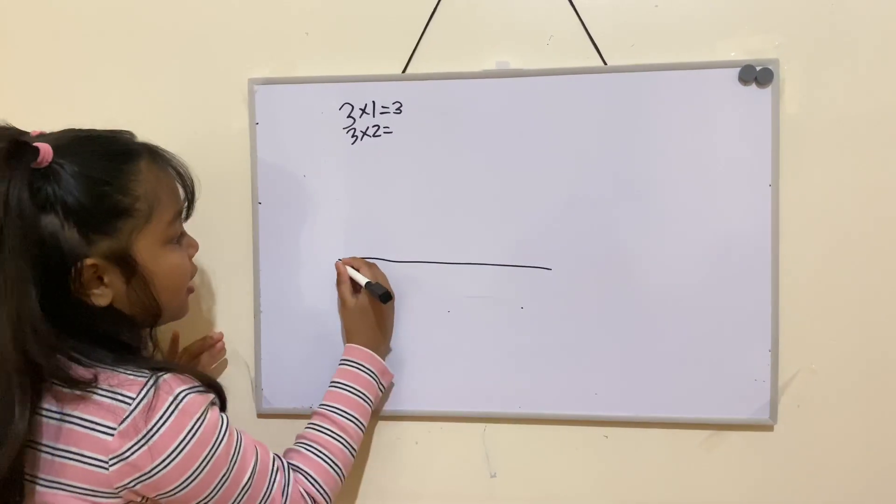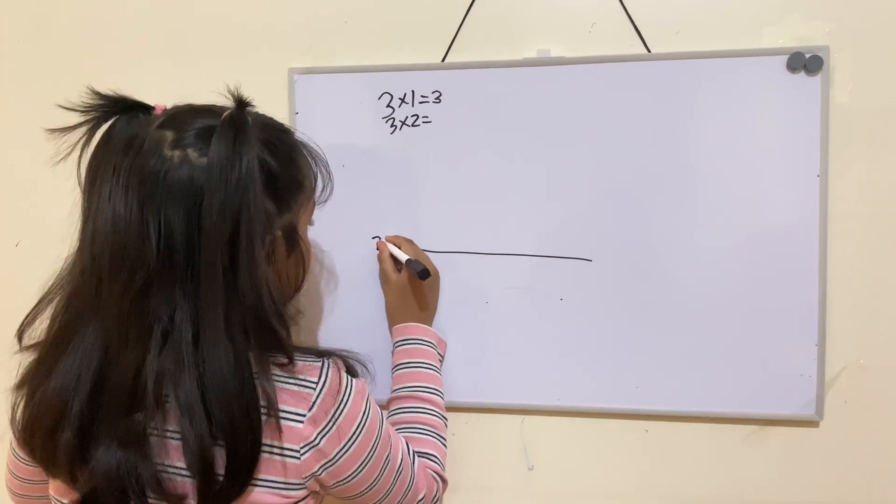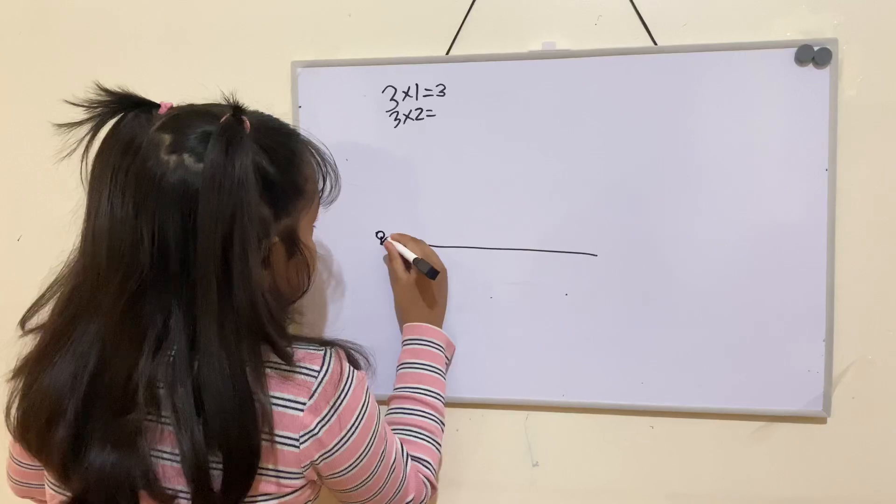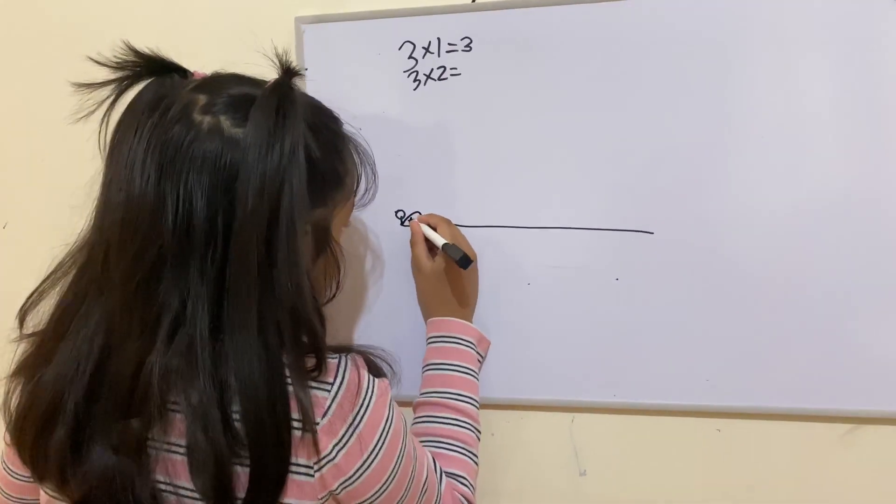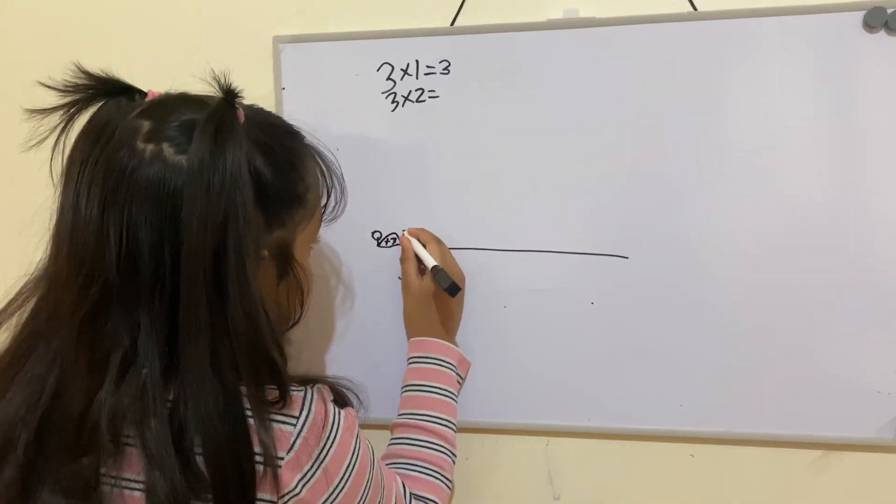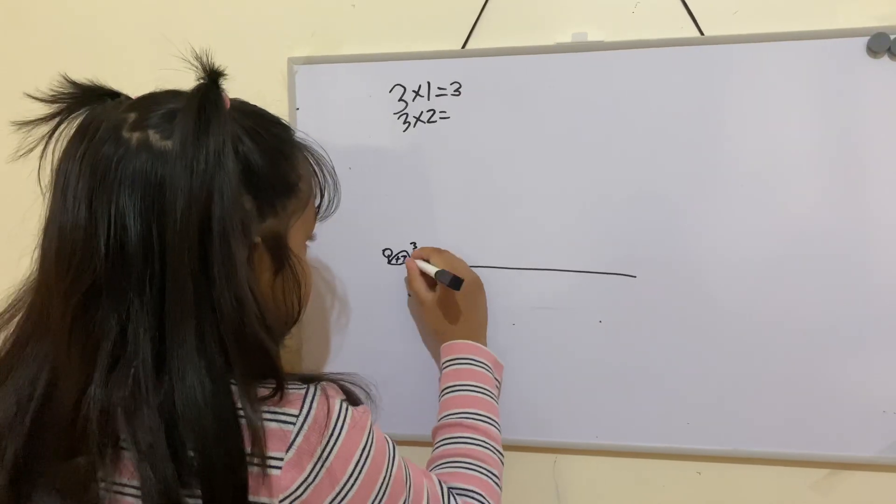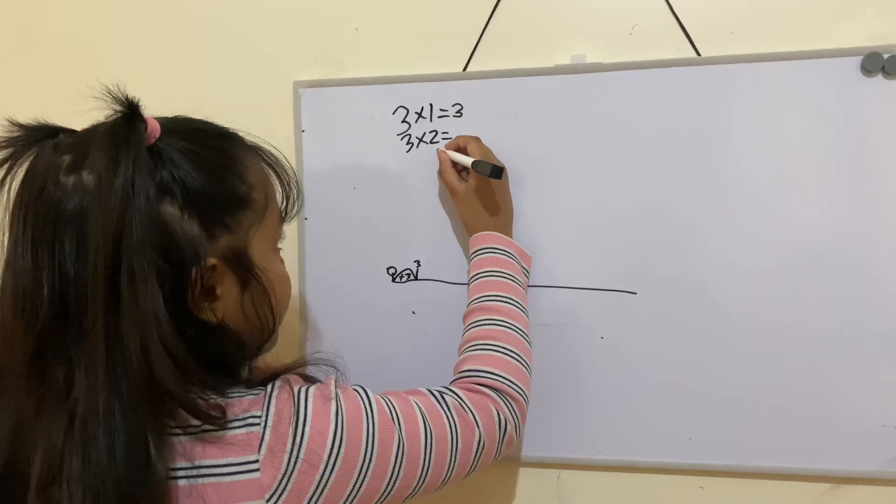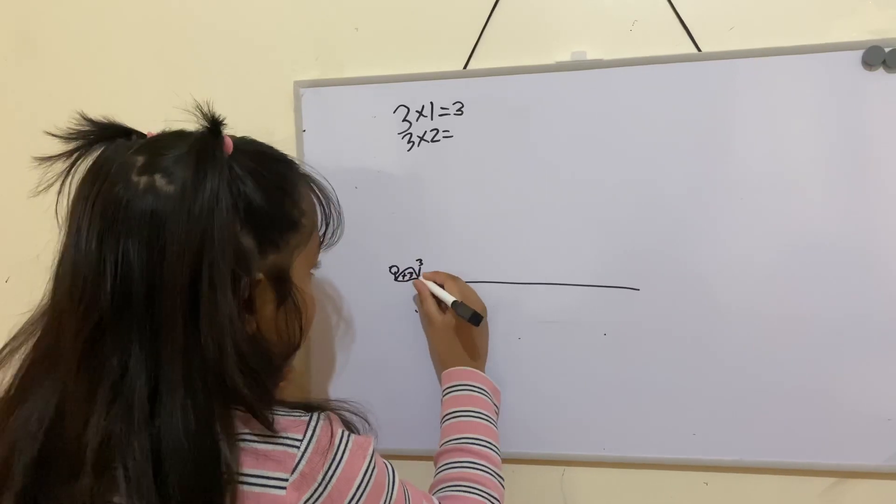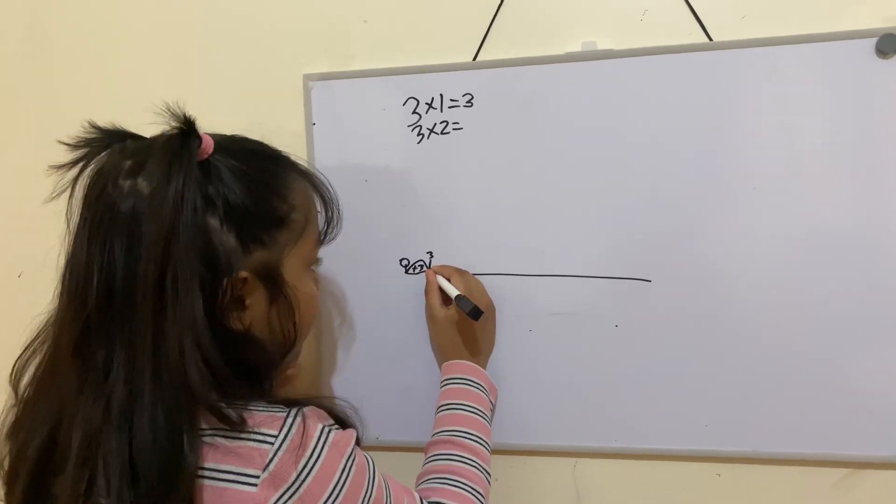Then you put a 0 here, and then you add 3 equals 3. Now, the second number tells you how many jumps you have to do. I have to do 2 jumps.